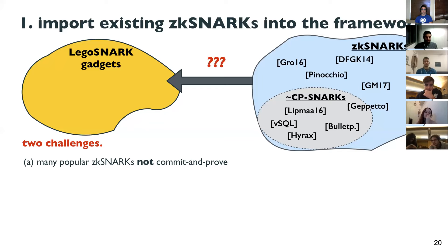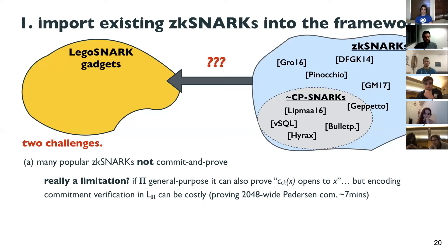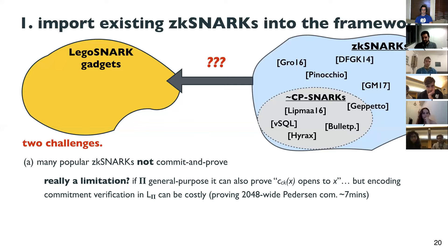This poses two challenges. First, many schemes are not committed proof — but since these general-purpose schemes are powerful, you could in principle use them to express the opening of a commitment. The problem is this is costly. We ran experiments showing that expressing a Pedersen commitment in a circuit — even with optimizations like SNARK-friendly elliptic curves — can cause up to seven minutes of proving time just for a 2014-wide Pedersen commitment with 256-bit coefficients, especially when the committed data is large.